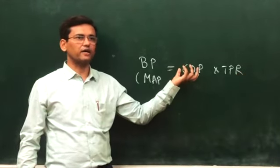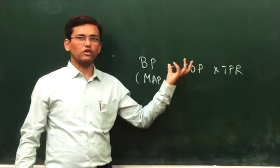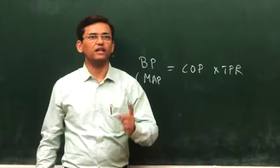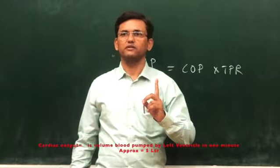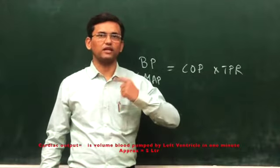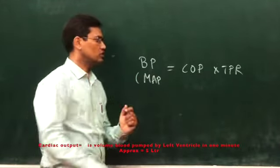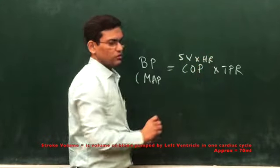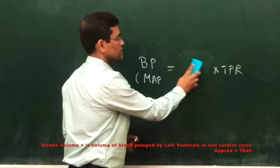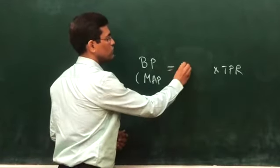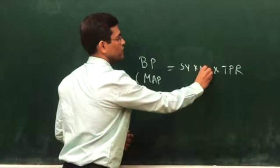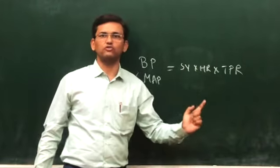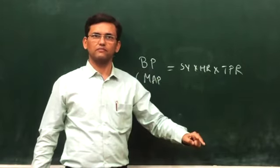Alternatively, we can change blood pressure by increasing the cardiac output. Cardiac output is the volume of blood pumped by the left ventricle in one minute, and whatever volume is pumped in one cardiac cycle is the stroke volume. So cardiac output equals stroke volume multiplied by heart rate. To control blood pressure, we need to increase or decrease any of these three values, and that is what the body does.